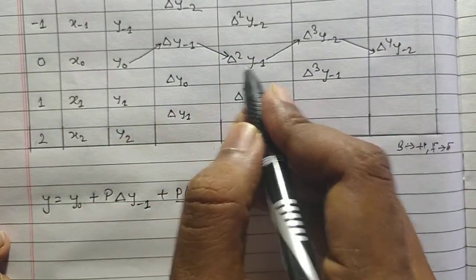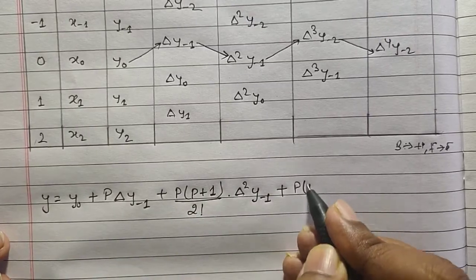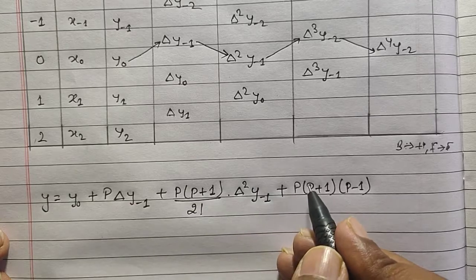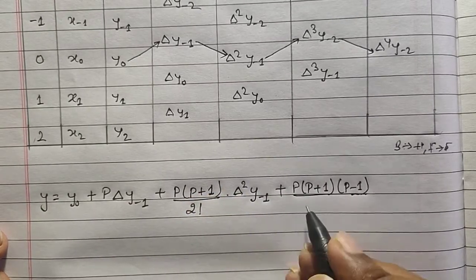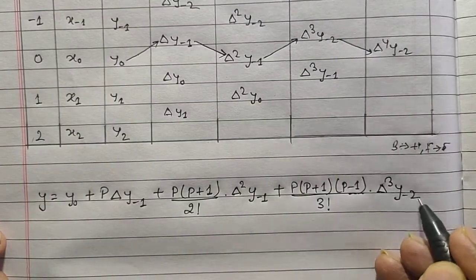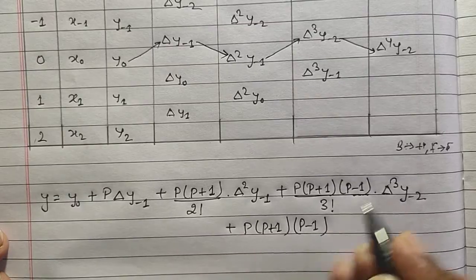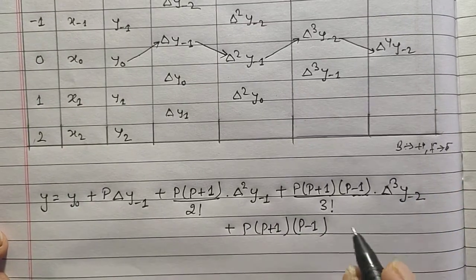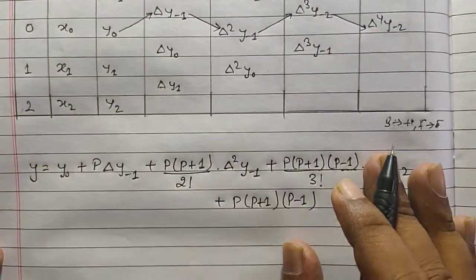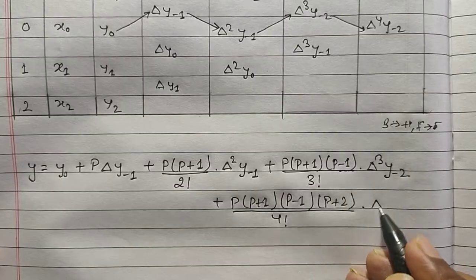After taking that term we take Δ²y₋₁, then plus p(p+1)/2! . After p+1 we take p−1, giving p(p+1)(p−1)/3! · Δ³y₋₂. Again plus p(p+1)(p−1)(p+2)/4! · Δ⁴y₋₂. In Gauss forward we took p−2, and since this is backward we take p+2. So the formula continues in this pattern.